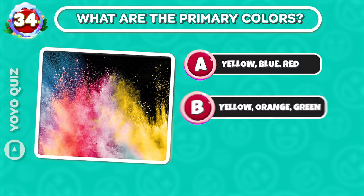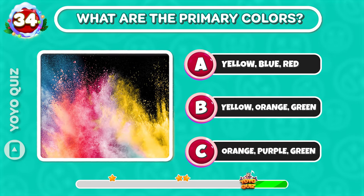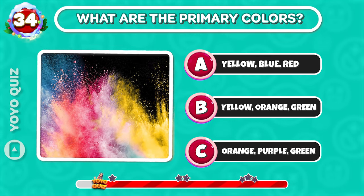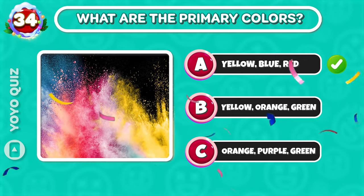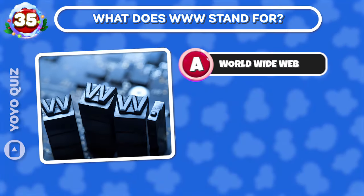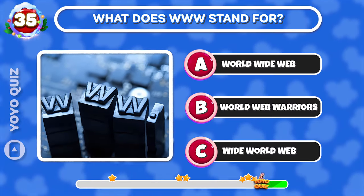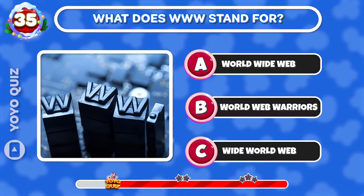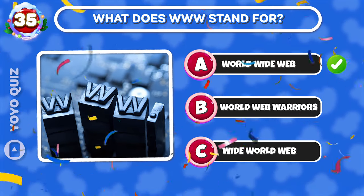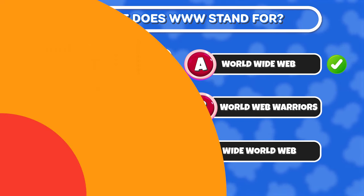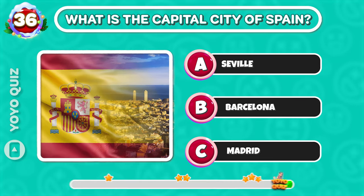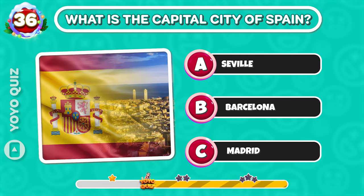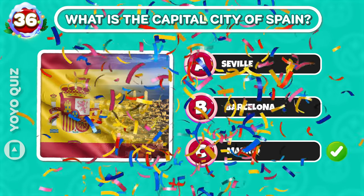Round 32: Who discovered penicillin? C is the correct answer. Round 33: What are the primary colors? It's C. Round 34: What does WWW stand for? Easy, it's C. Round 35: What is the capital city of Spain? It's C.